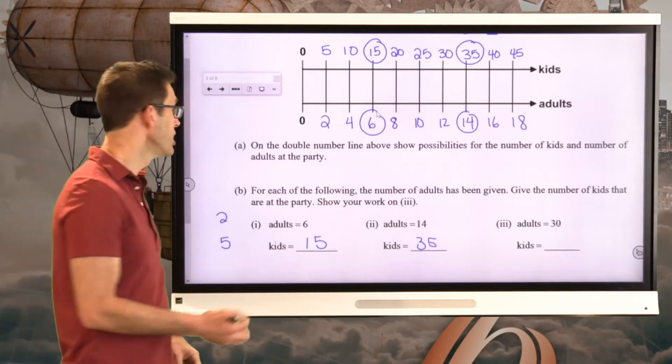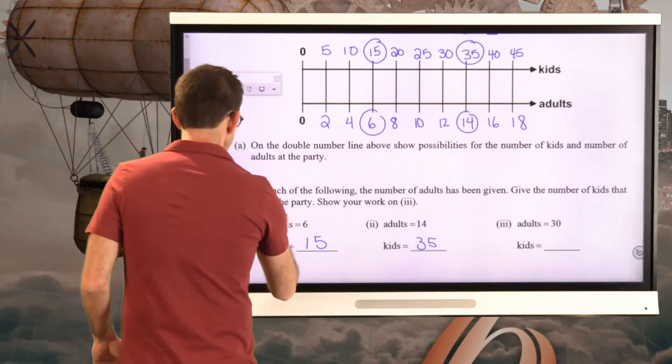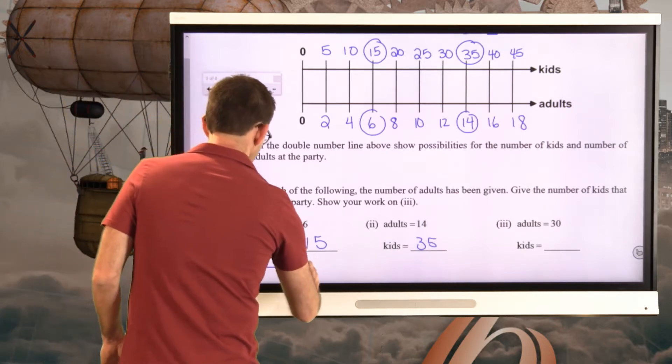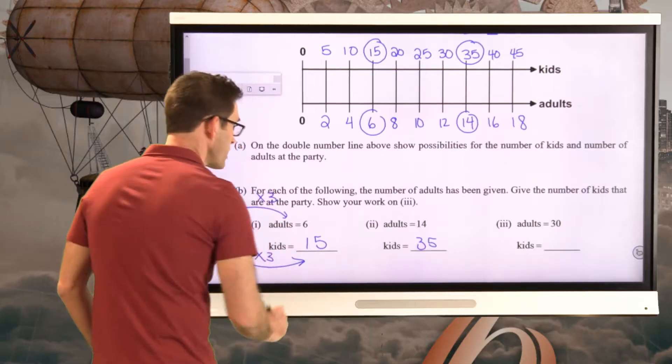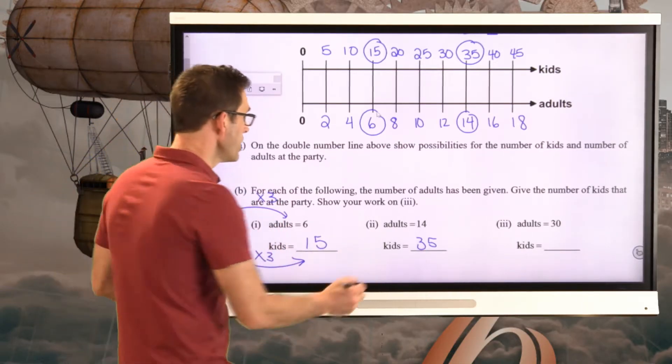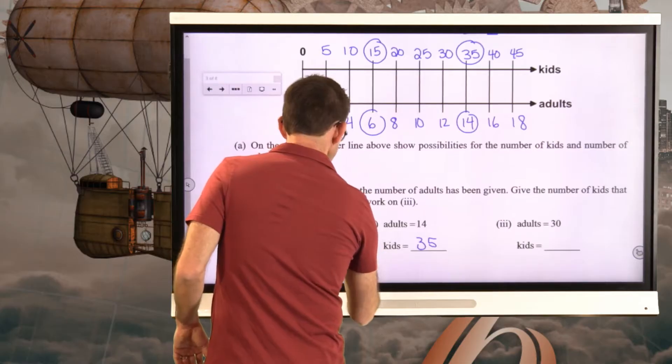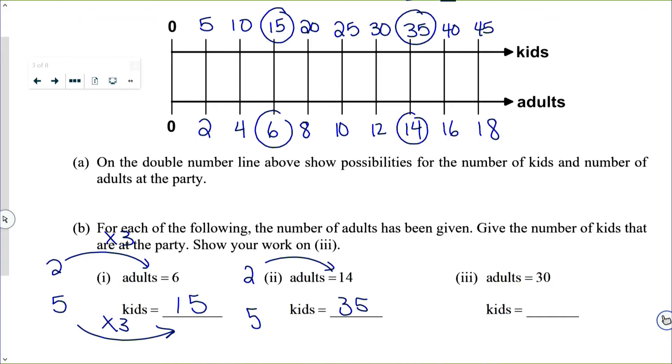Times 3 times 3. Likewise, in this one, when we have that 2 adults to 5 kids, we go this by multiplying by 7 in each case. So here, if we've still got that ratio of 2 to 5, then the question is, what do we have to scale 2 by in order to get 30?